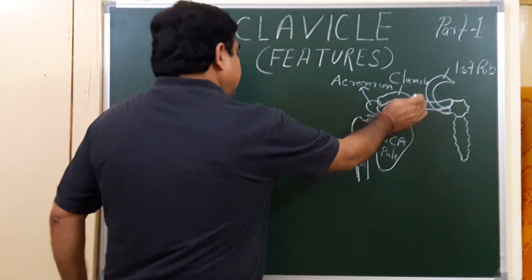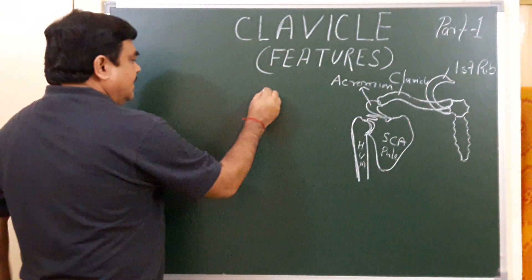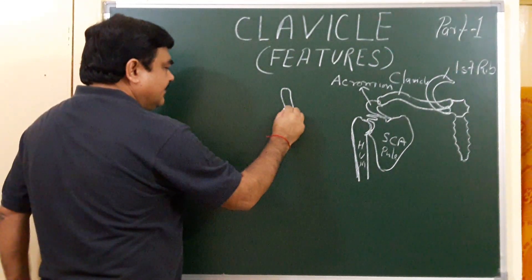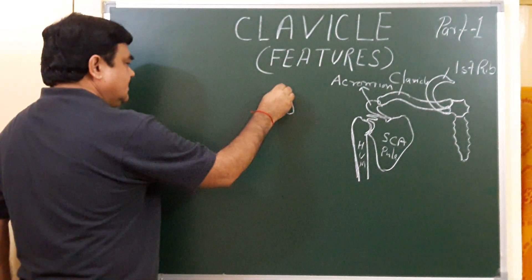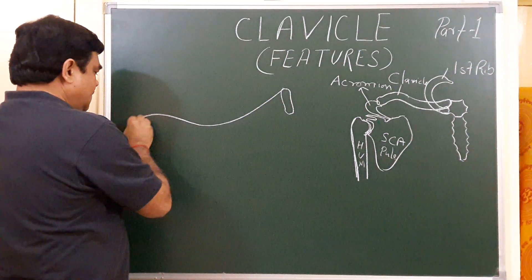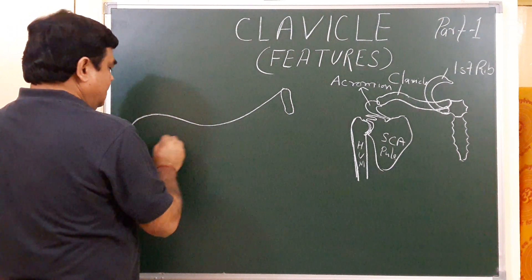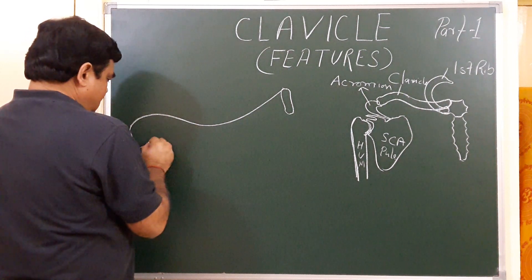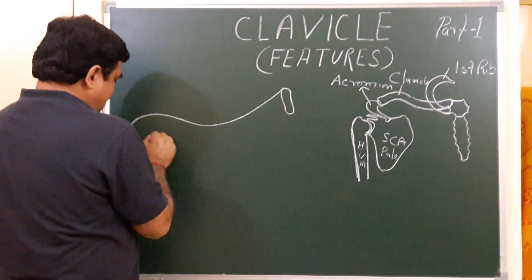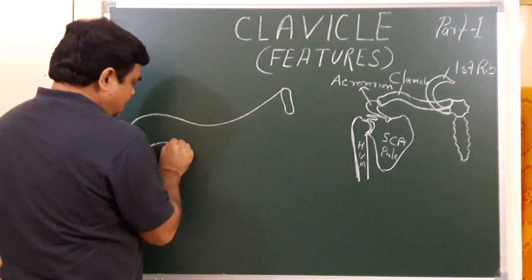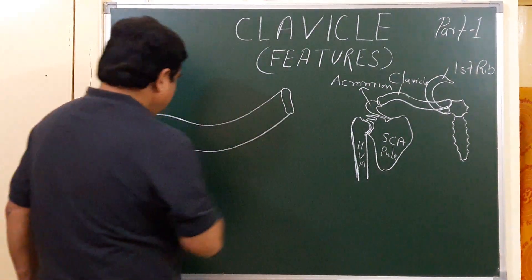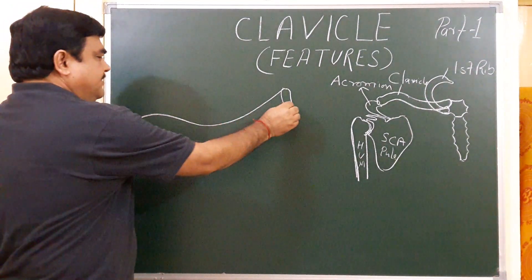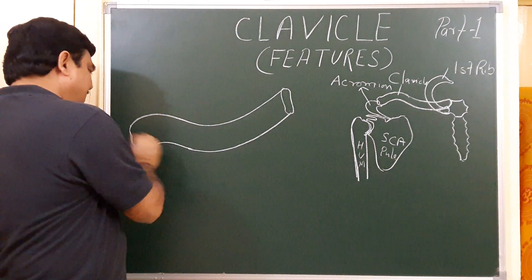Now we enlarge this diagram. This is the medial end of the clavicle. Here this is the medial end, and this is the lateral end.